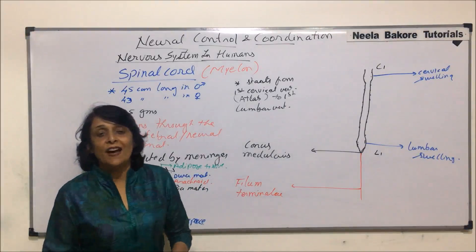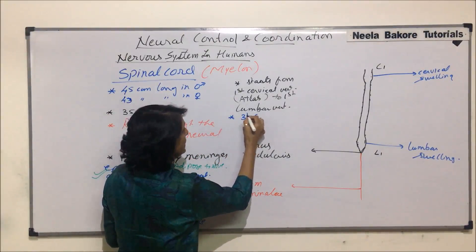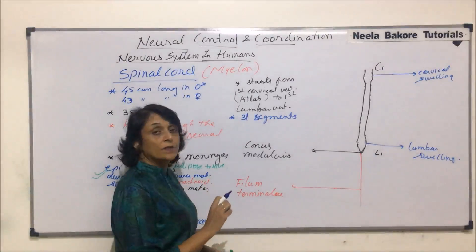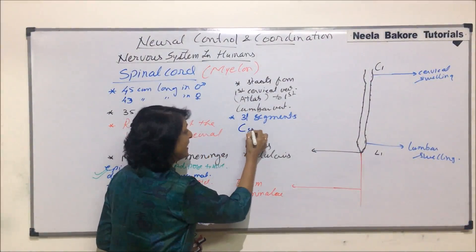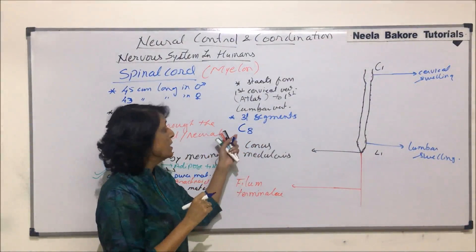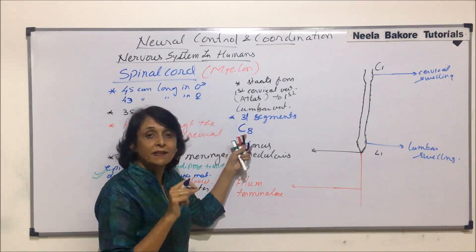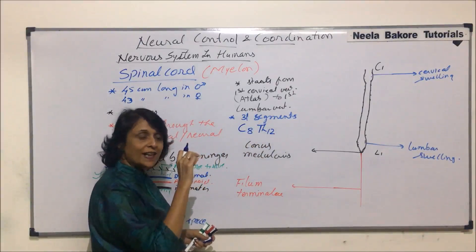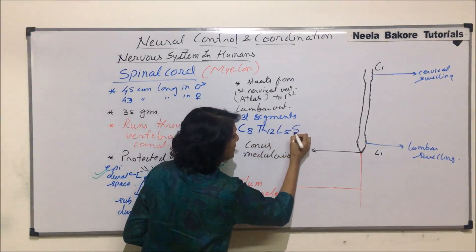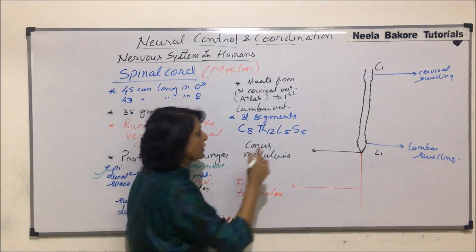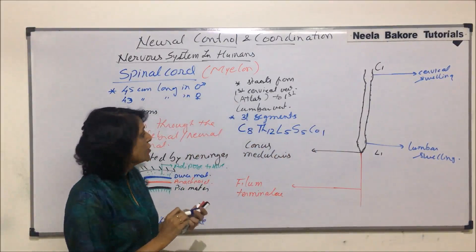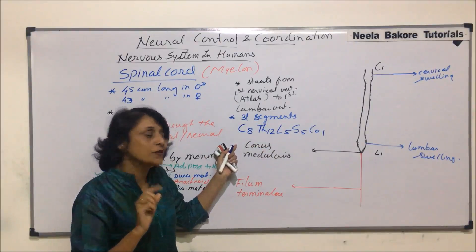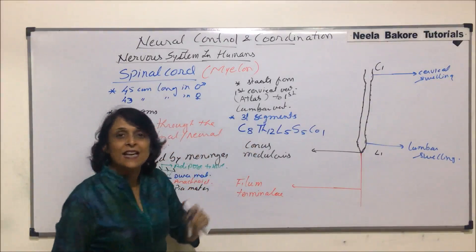The complete spinal cord is divided into 31 segments, and these are in correspondence to the vertebrae. From the cervical region there are eight segments, because there are seven cervical vertebrae but eight spinal nerves. Then thoracic region has 12, lumbar has five, sacral region has five, and the coccyx region has one. That totals 31 segments. The only difference is seven cervical vertebrae but eight segments of spinal cord.